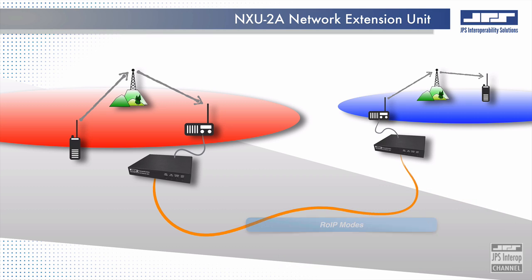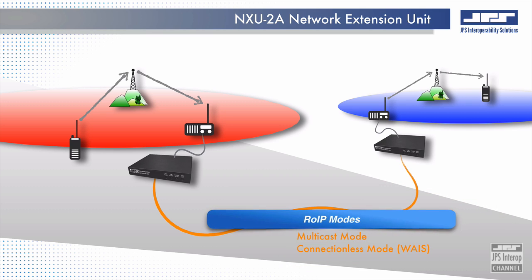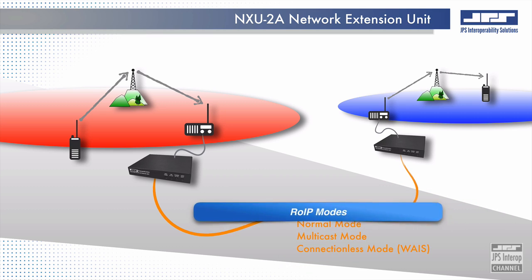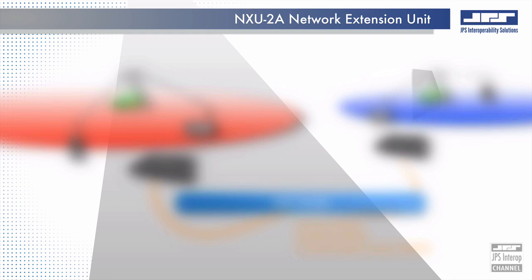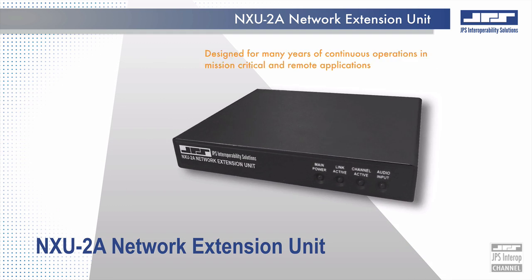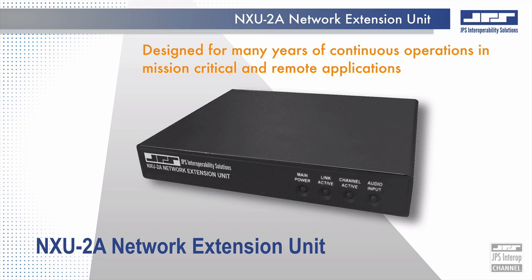User-selectable ROIP modes allow for simple integration into complex architectures such as JPS wide area interoperability systems, also known as WASTE. Designed for many years of continuous operations in mission critical and remote applications, the NXU2A network extension unit can provide persistent and transparent communications with other NXU2A modules, DSP radio interface modules, or ROIP resource channels of any JPS ACU interoperability gateway.